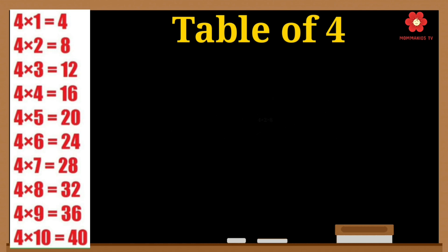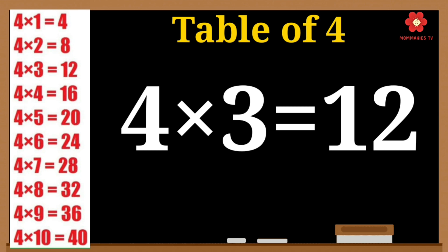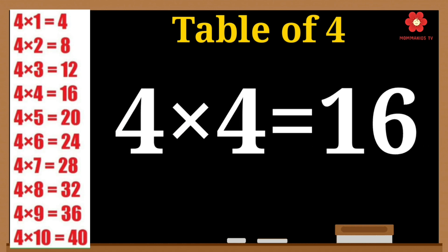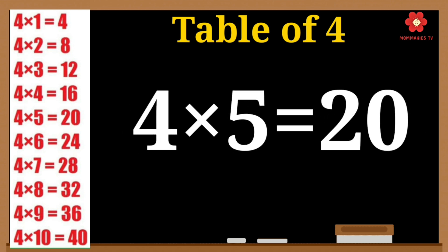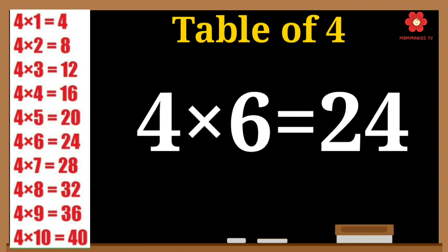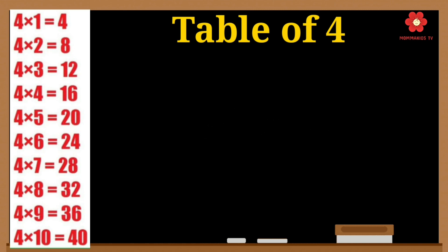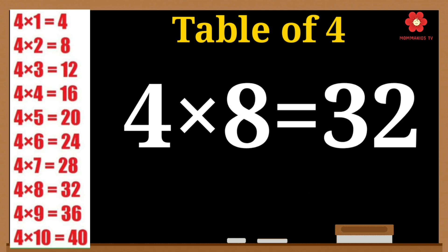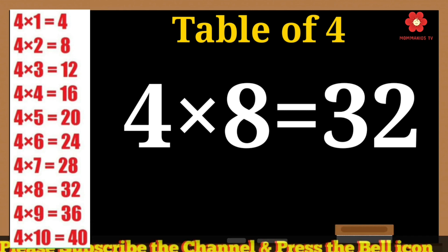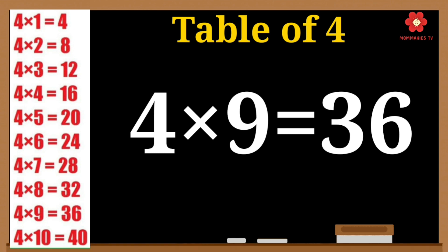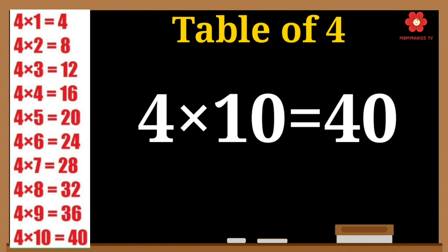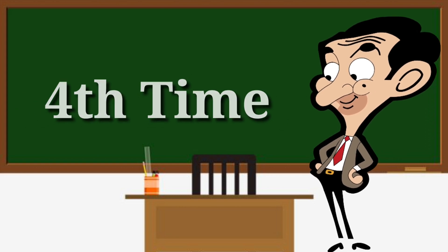4 twos are 8. 4 threes are 12. 4 fours are 16. 4 fives are 20. 4 sixes are 24. 4 sevens are 28. 4 eights are 32. 4 nines are 36. 4 tens are 40.